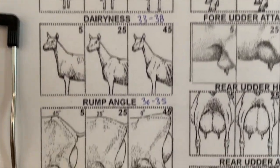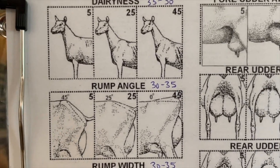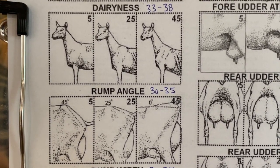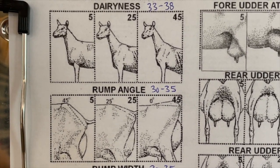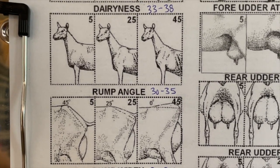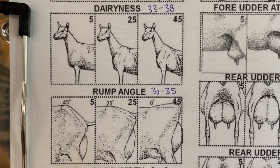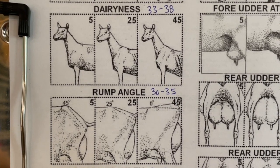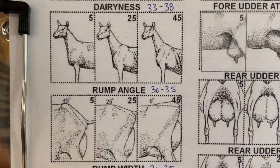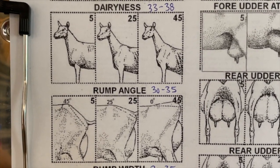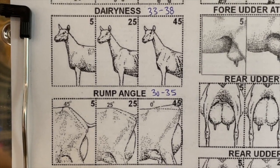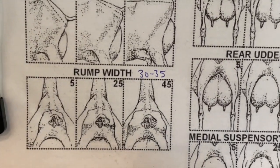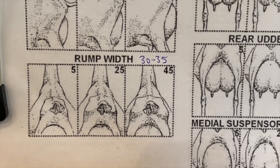For rump angle — something we're definitely still improving in the Nigerian breed — a score of 5 means a very steep 45-degree angled rump with a lot of slope to it. We're looking for a score of about 30 to 35. If you're doing 25-plus in Nigerians, that's pretty sweet. Rump angle is a tough one we need to keep working on in the breed.